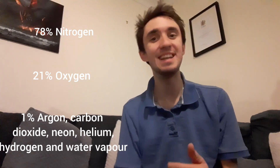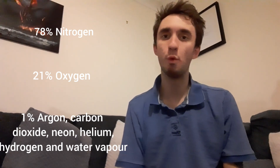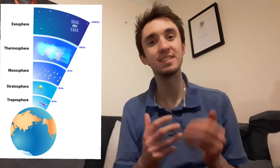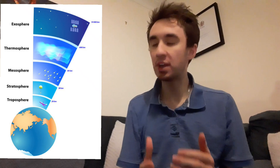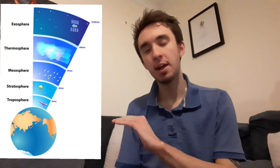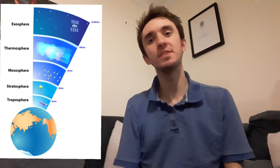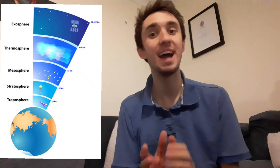Here on Earth, our atmosphere is comprised of 78% nitrogen, 21% oxygen, and then the remaining 1% made of things like argon, carbon dioxide, neon, helium, hydrogen and water vapour. The atmosphere is divided into five distinctive layers, all based on things like temperature and composition. We'll start off near the bottom and work our way up until we reach the edge of our atmosphere and the start of space. Let us start at the bottom, in the troposphere.